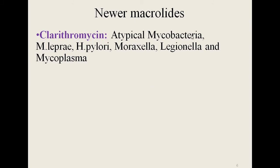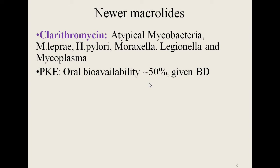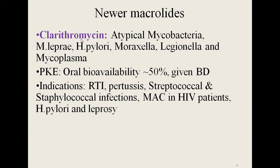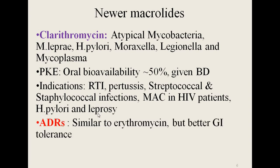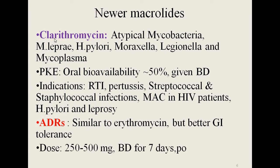Clarithromycin is effective against atypical mycobacteria like Mycobacterium kansasii, Mycobacterium smegmatis and Mycobacterium avium complex. It is also effective against Mycobacterium leprae, Helicobacter pylori, Moraxella, Legionella and Mycoplasma. Approximately 50% of the orally administered dose is absorbed and it is given twice a day. Indications include respiratory tract infections, pertussis, streptococcal and staphylococcal infections, and Mycobacterium avium complex in HIV patients. Clarithromycin is an important part of triple therapy for peptic ulcer because of its activity against Helicobacter pylori, and is also a reserve drug for leprosy. Adverse effects are similar to erythromycin but with better gastrointestinal tolerability. The usual dose is 250 to 500 milligrams twice a day for 7 days orally.